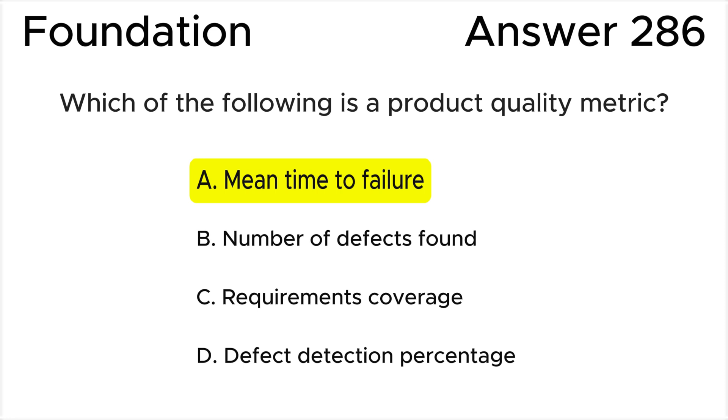Answer B is invalid because number of defects found is an example of a defect metric, not a product quality metric. Answer C is invalid because requirements coverage is an example of a coverage metric, not a product quality metric. Answer D is invalid because defect detection percentage is an example of a defect metric, not a product quality metric.